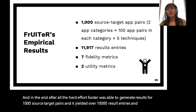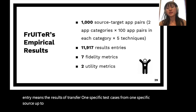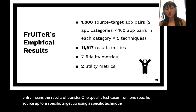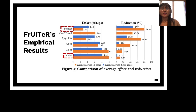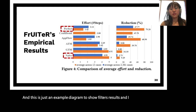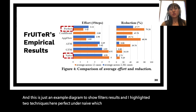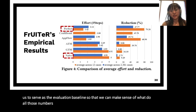Each entry represents the result of transferring one specific test case from one specific source app to a specific target app using a specific technique. Each result entry shows the seven fidelity metrics and the two utility metrics. This example diagram shows Fruiter's results, highlighting the 'perfect' and 'naive' baseline techniques we developed to help make sense of the numbers seen for existing techniques.